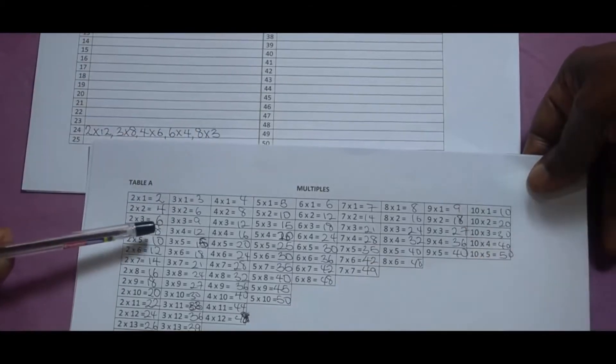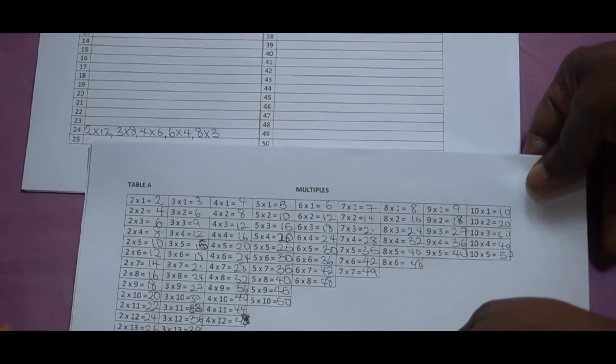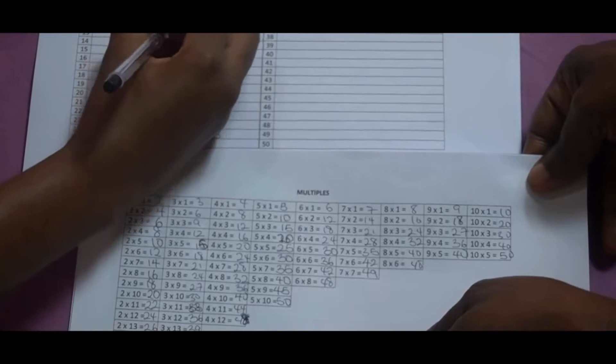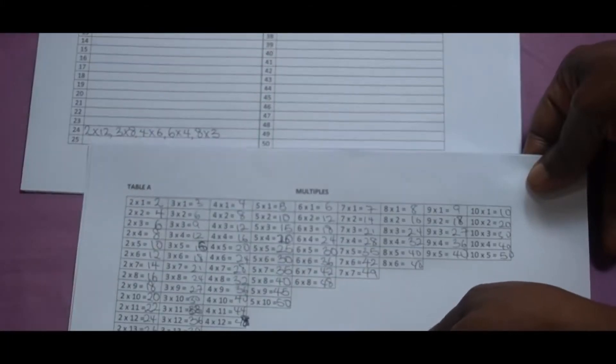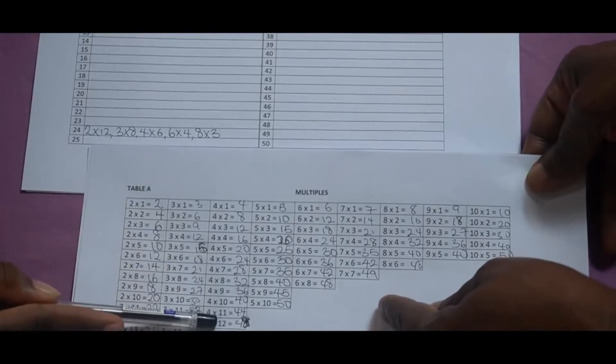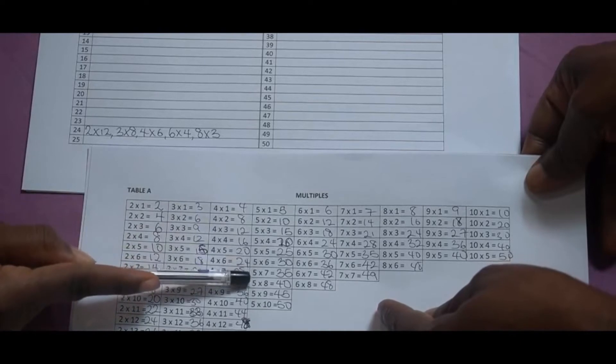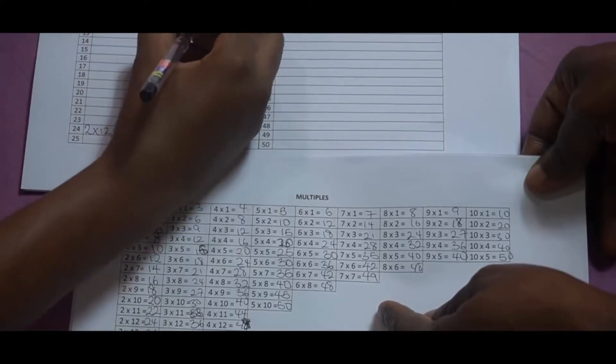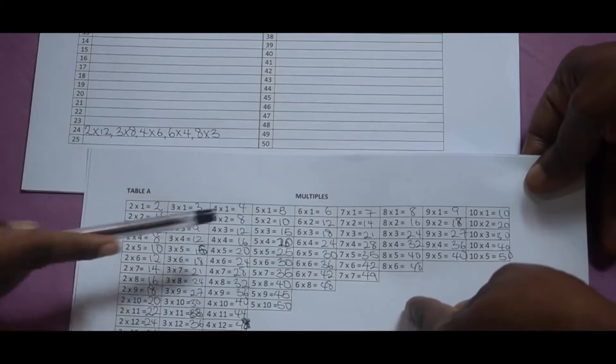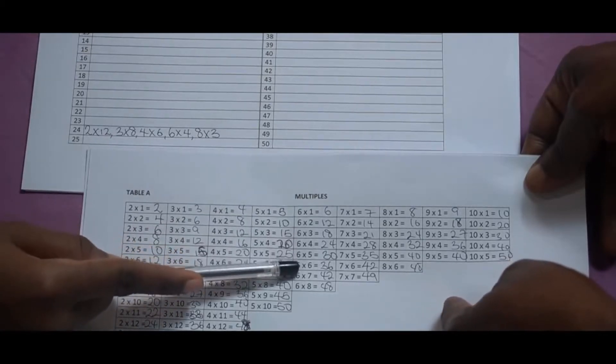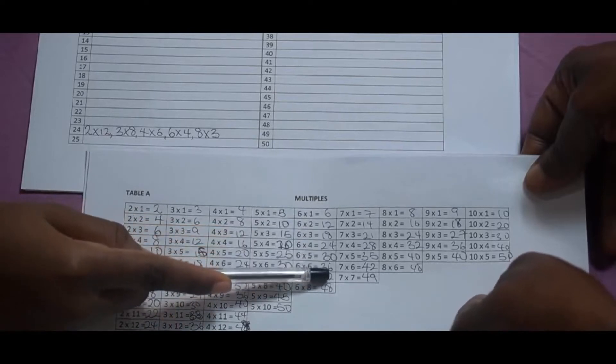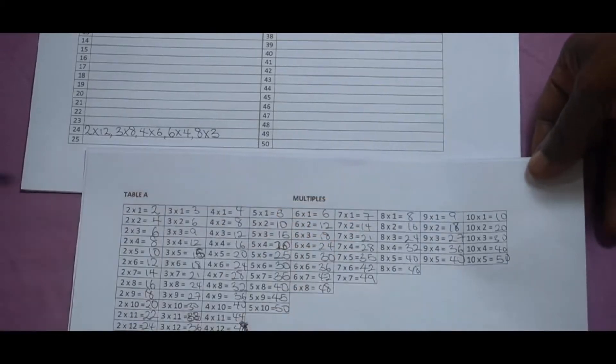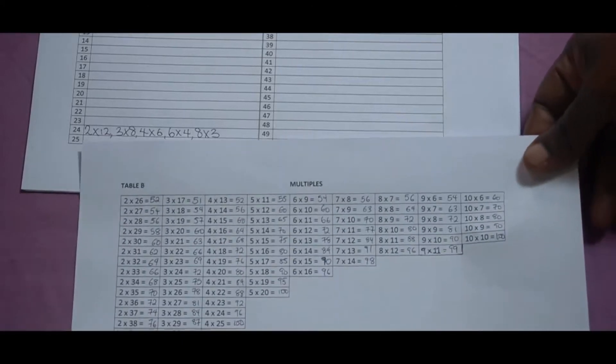Where else? 4 times 3, write it down. Where else can you find 12? 6 times 2, write it down. Okay.